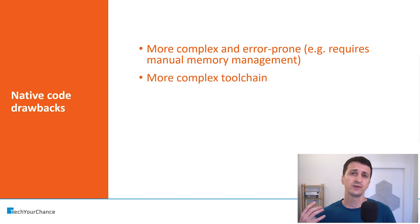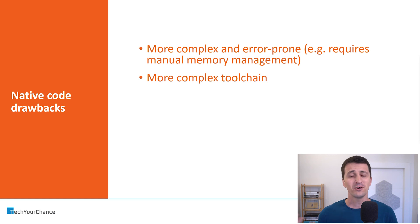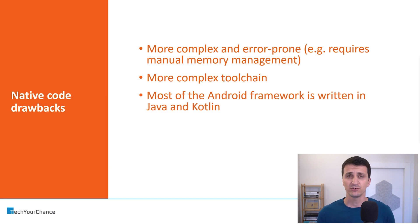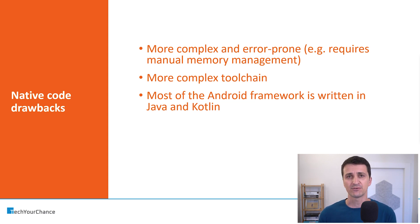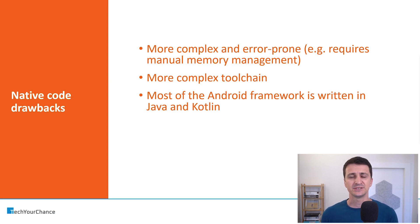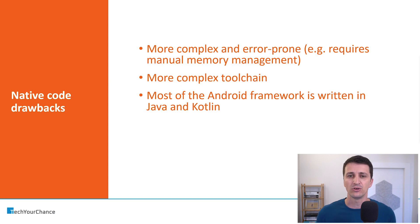In addition, native code features a much more complex toolchain. If you know what cross-compilation is and how different compilers support different cross-compilation targets, all of this complexity is inherent to using native code inside your Android applications. Most of the Android framework — the framework we use to draw pixels on the screen — is written in Java or Kotlin. Therefore, if you use native code, most of that functionality will not be available to you. There are some parts of the Android framework that expose specific APIs to native code, but most Java APIs will not be available.